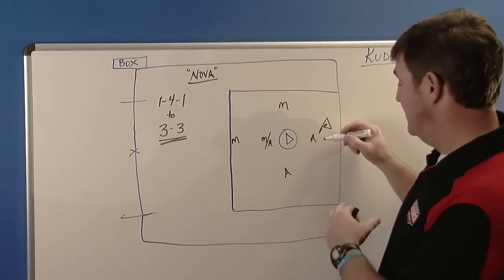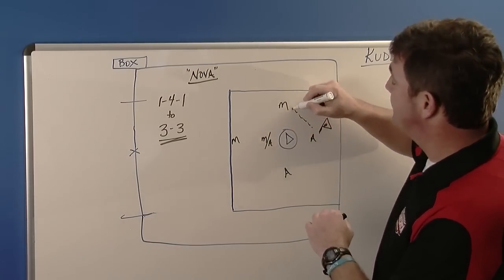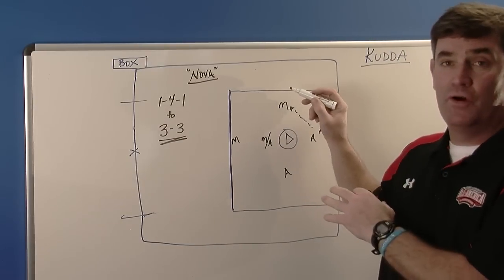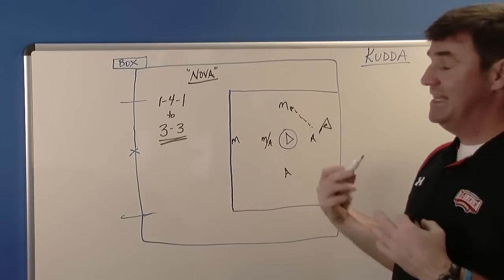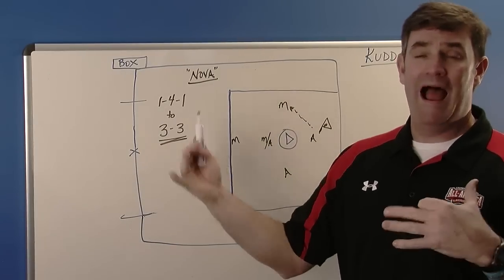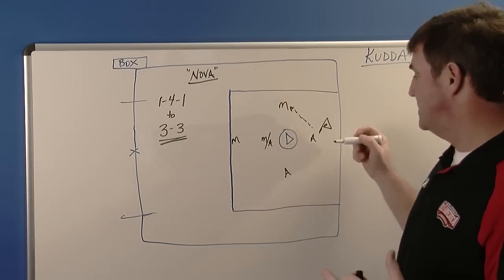Ball starts on the end line with an attackman behind the cage and he's going to get it quickly to this midfielder on the wing. We refer that as simply a timing pass. That lets everybody know how things are operating and how fast the ball is going to move.